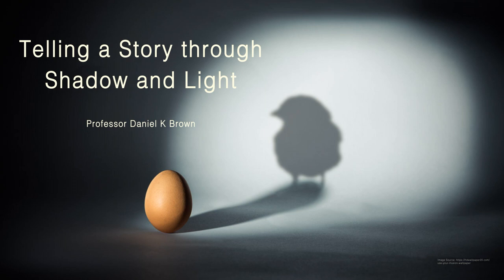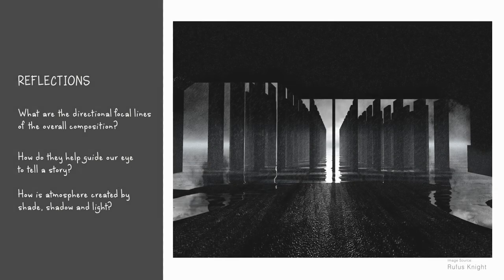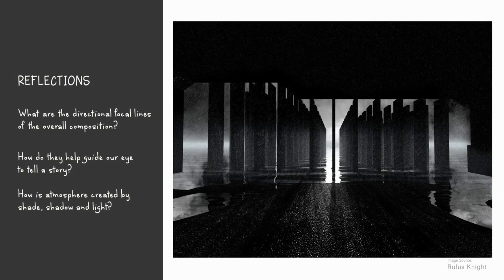This brings us to the end of today's seminar. To help you reflect further on what you have learned, let's look more closely at four compositions. In this composition by student Rufus Knight, reflect upon the directional focal lines of the overall composition and how they guide the eye to tell a story. How is atmosphere created by shade, shadow, and light? Pause the video to give yourself time to reflect on the answer, and then begin the video once again to discuss a second composition.